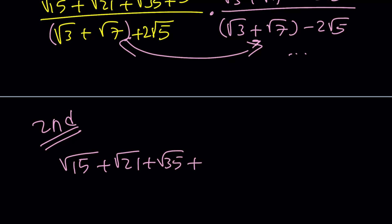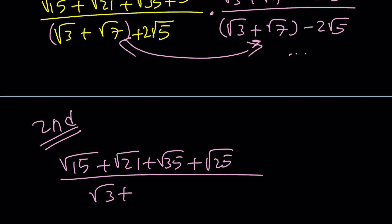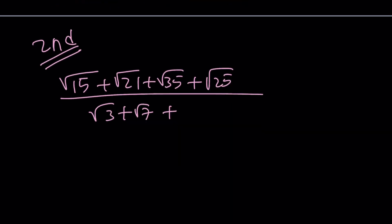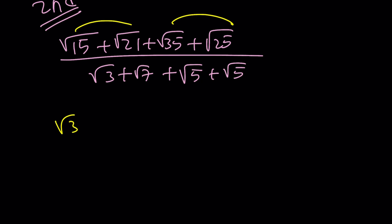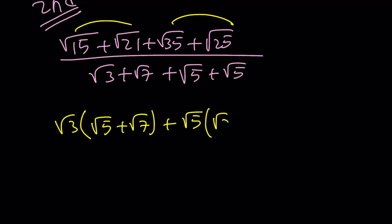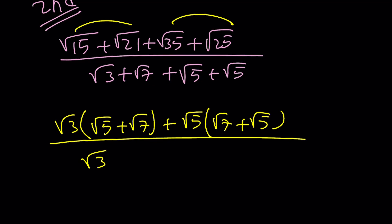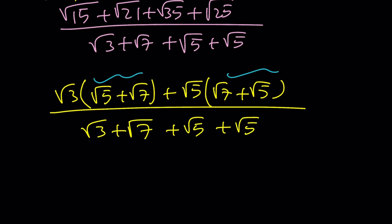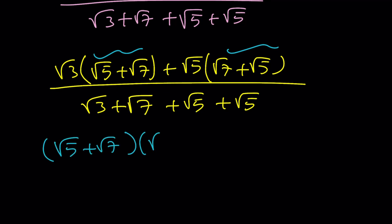Now for the second method. Since 5 is made up of root 5 times root 5, I'm going to write it as root 25 — that's actually going to be better. I'm also going to split the 2 root 5 into root 5 plus root 5, because I'm going to factor the numerator by grouping and I'd rather have four terms at the bottom. Factoring out root 3 from the first group gives root 5 plus root 7, and root 5 is a common factor in the second group, giving root 7 plus root 5.